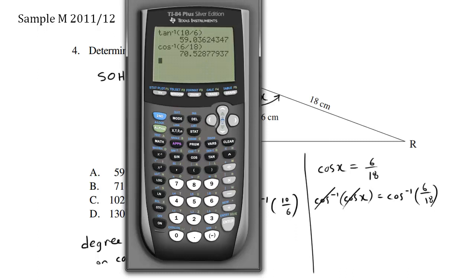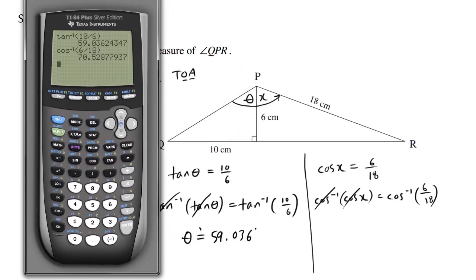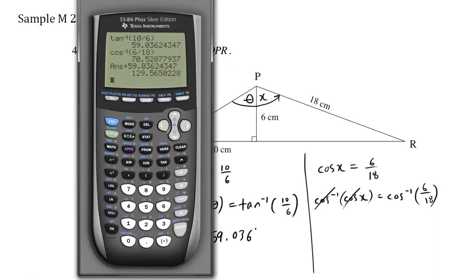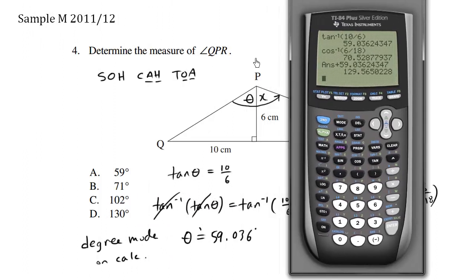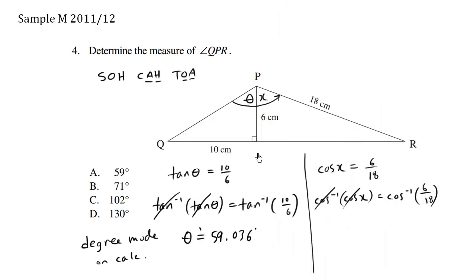So if I add these two angles, because I want to solve for x plus theta, so I have this plus the answer plus, and let me just go back up to this number here, 59 degrees. Press enter. So I get the final answer of 129.57 degrees. And when I look at the available choices, 130 degrees is the closest answer. So what we have here is answer D is correct.